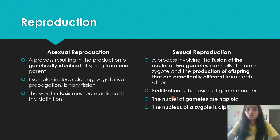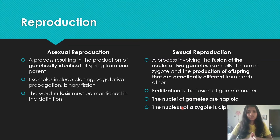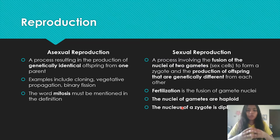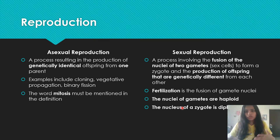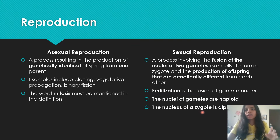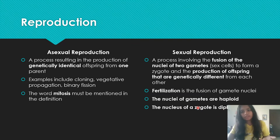In sexual reproduction, the nuclei of gametes — which are sex cells — are haploid, meaning they have half the number of chromosomes of a body or somatic cell. The nucleus of a zygote is diploid, meaning it has 46 chromosomes, whereas a haploid cell has 23 chromosomes in human beings. In asexual reproduction, you have basic examples like cloning, vegetative propagation, and binary fission.